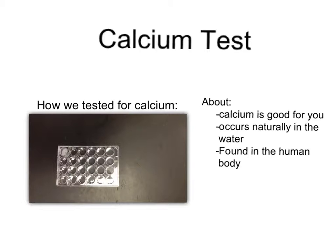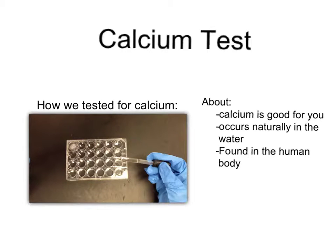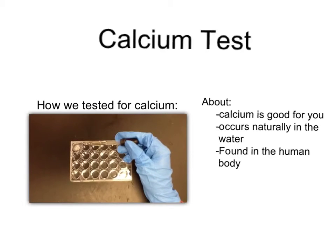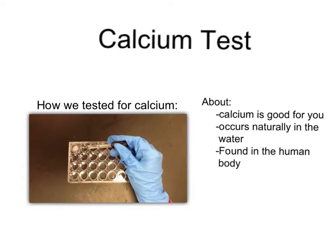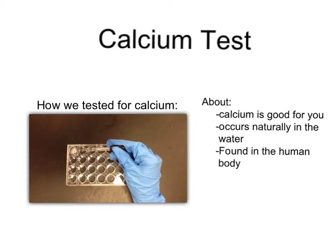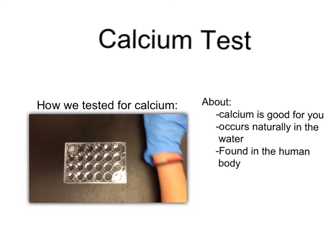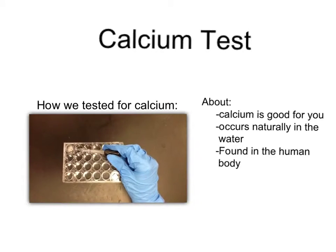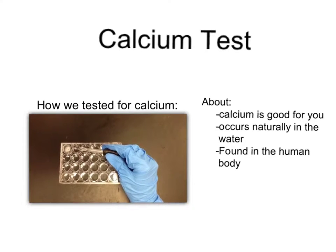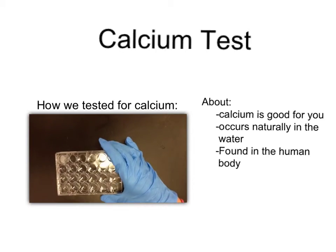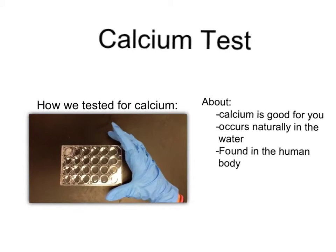We tested for calcium. Over here you will see how we tested for calcium. In this one we have a control, and in this one we are going to add 20 drops of lake water. Then we are going to add 3 drops of the test ion into it. As you can see there is no change, so that means there is no calcium found in the water.